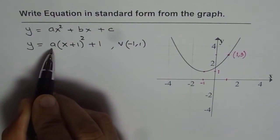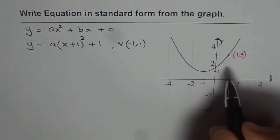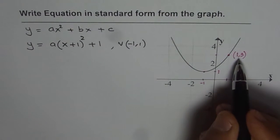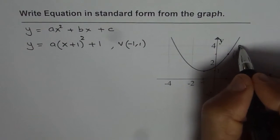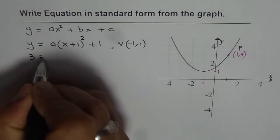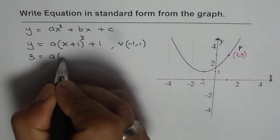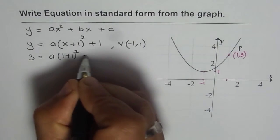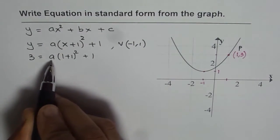Now to find the value of a, what we should do? We need to substitute a point's value which is x = 1, y = 3. So we can write 3 here, 1 for x, so we get a times (1 + 1) whole square plus 1. Now let's solve for a.